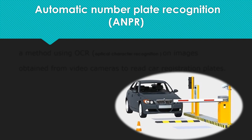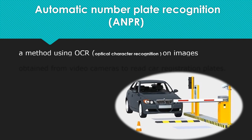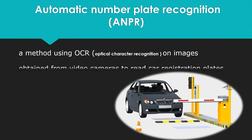Automatic number plate recognition is a method using OCR (optical character recognition) on images obtained from video cameras to read car registration plates.